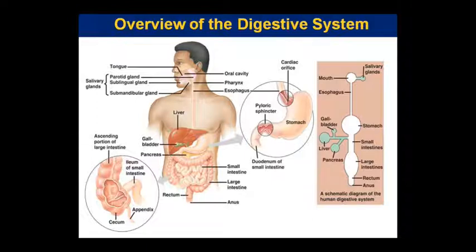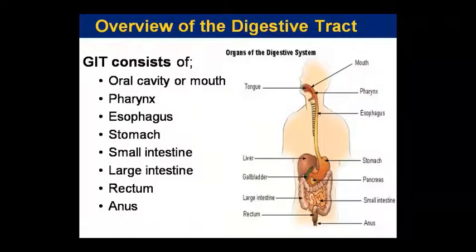From the pyloric sphincter, the tract opens into the duodenum or small intestine, and the small intestine opens into the large intestine. The large intestine is shown here with the ascending portion, ileum, cecum, and appendix. Then the large intestine leads to the rectum, and the rectum exits through the anus. So the order of the digestive tract is: oral cavity or mouth, then pharynx, esophagus, stomach, small intestine, large intestine, rectum, and anus.